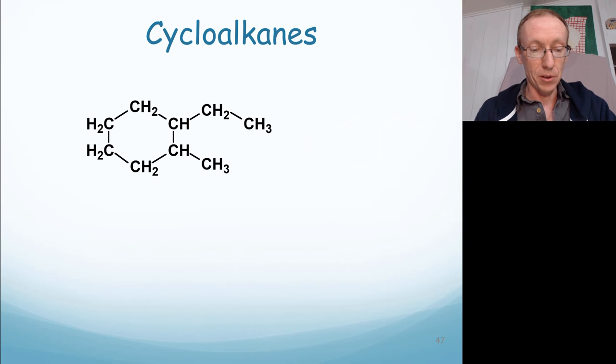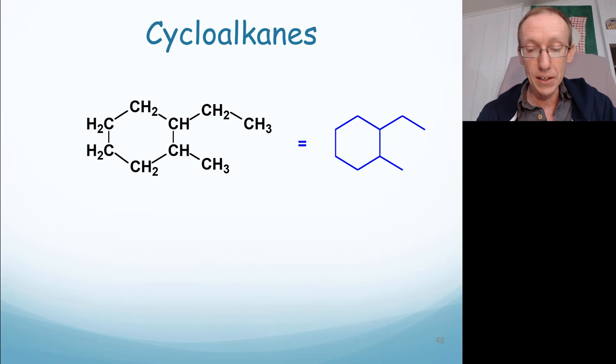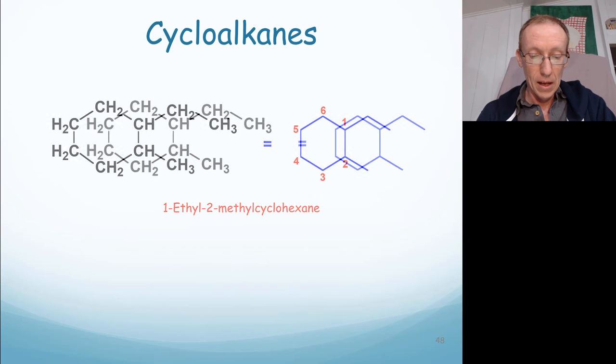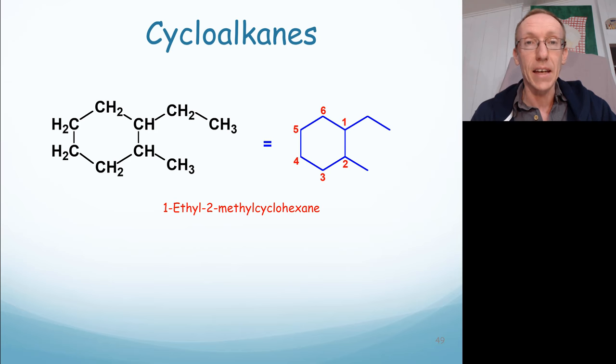Okay, so let's look at multiply substituted cycloalkanes. So here's the Kekulé structure of this molecule. It's a cyclohexane, it's a six-membered ring, and the bigger alkyl group is the ethyl group. So we number this starting at the ethyl group and going towards the rest of the substituents, so going towards the methyl group. So now we've got a 1-ethyl, 2-methyl substituted compound, and it's a cyclohexane. So it's 1-ethyl-2-methylcyclohexane.